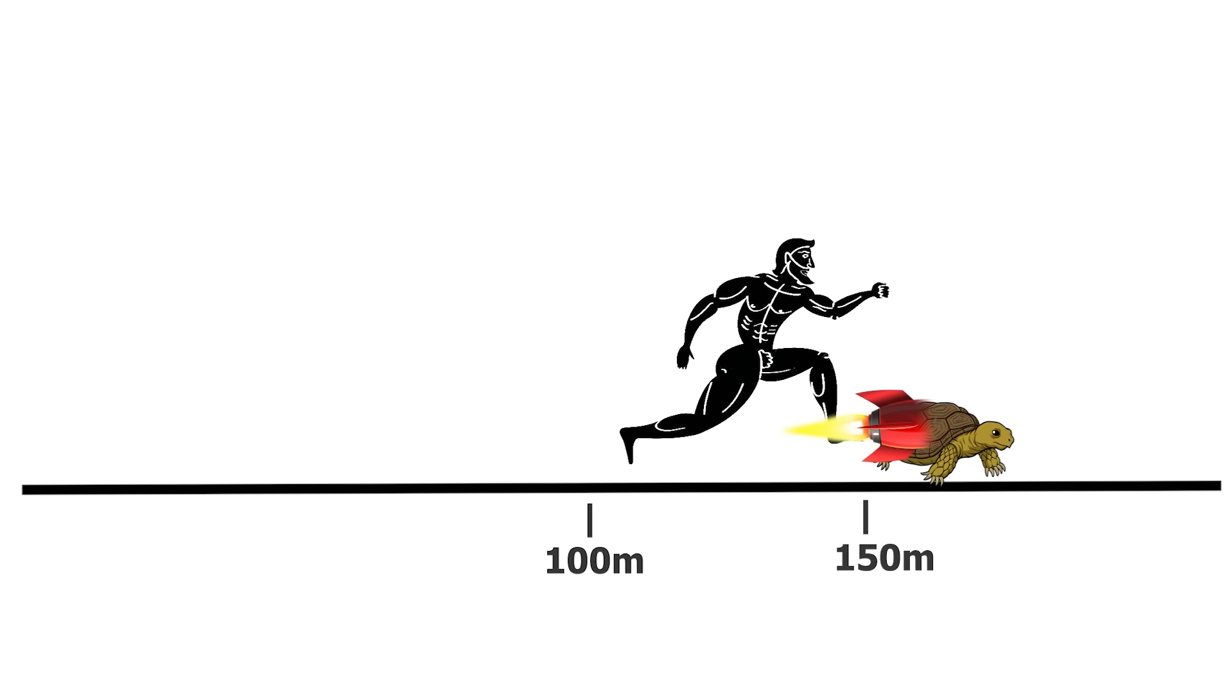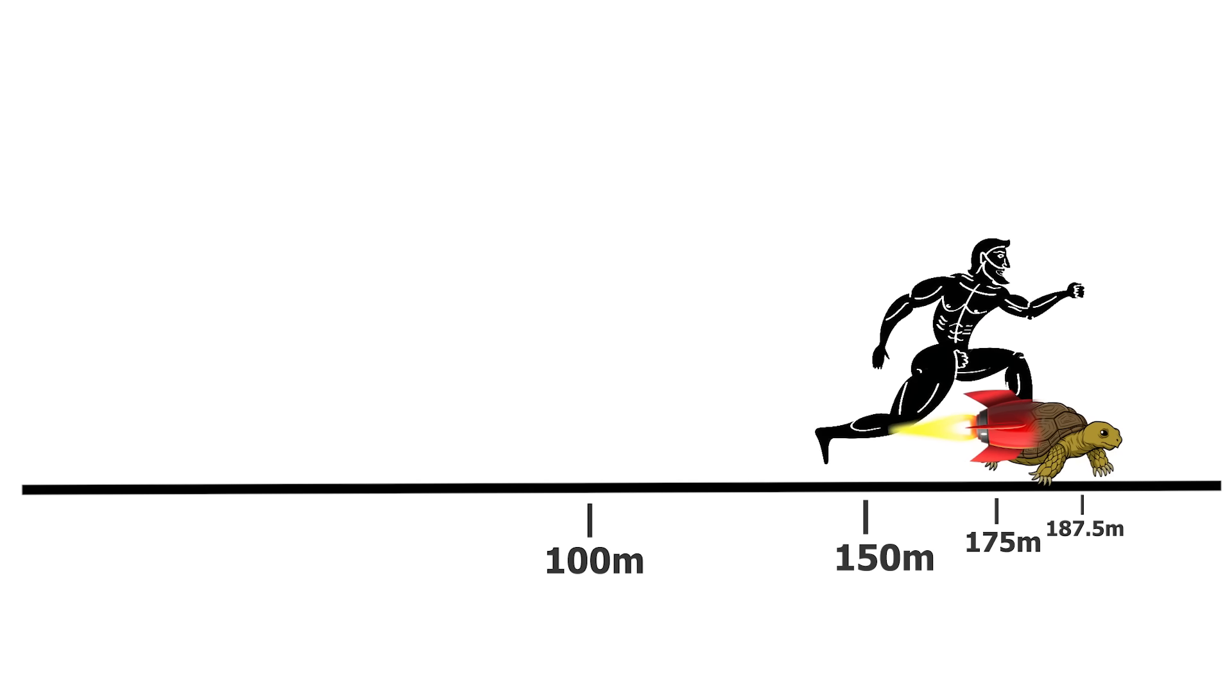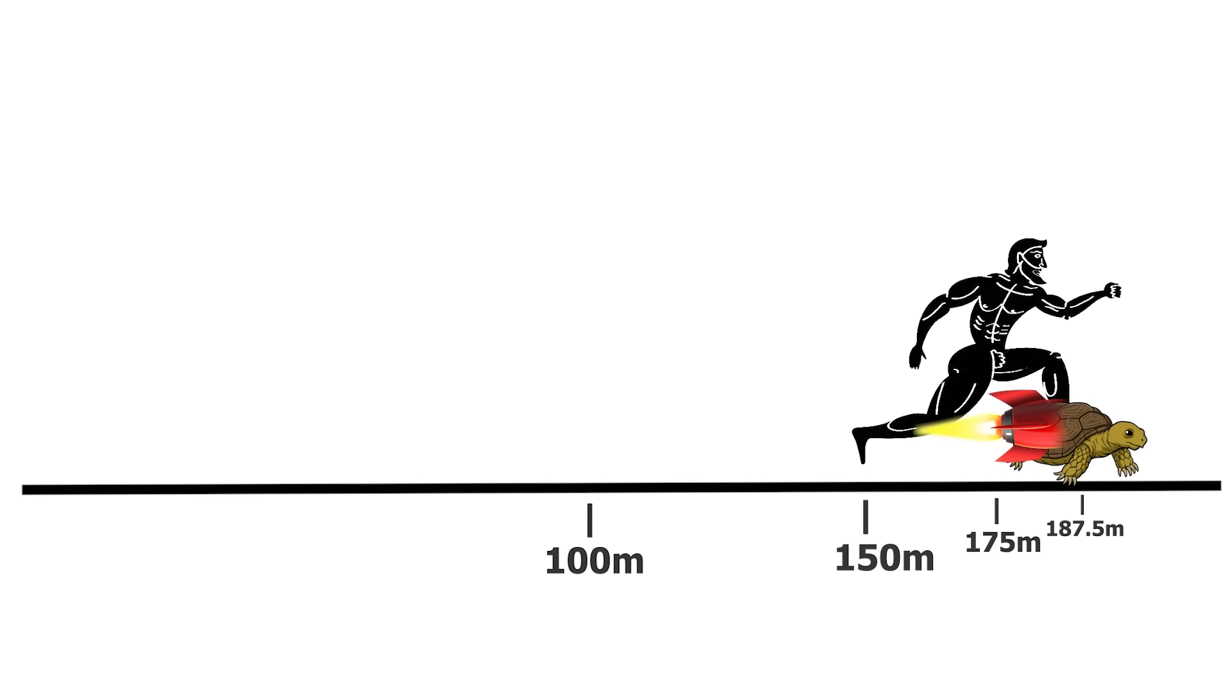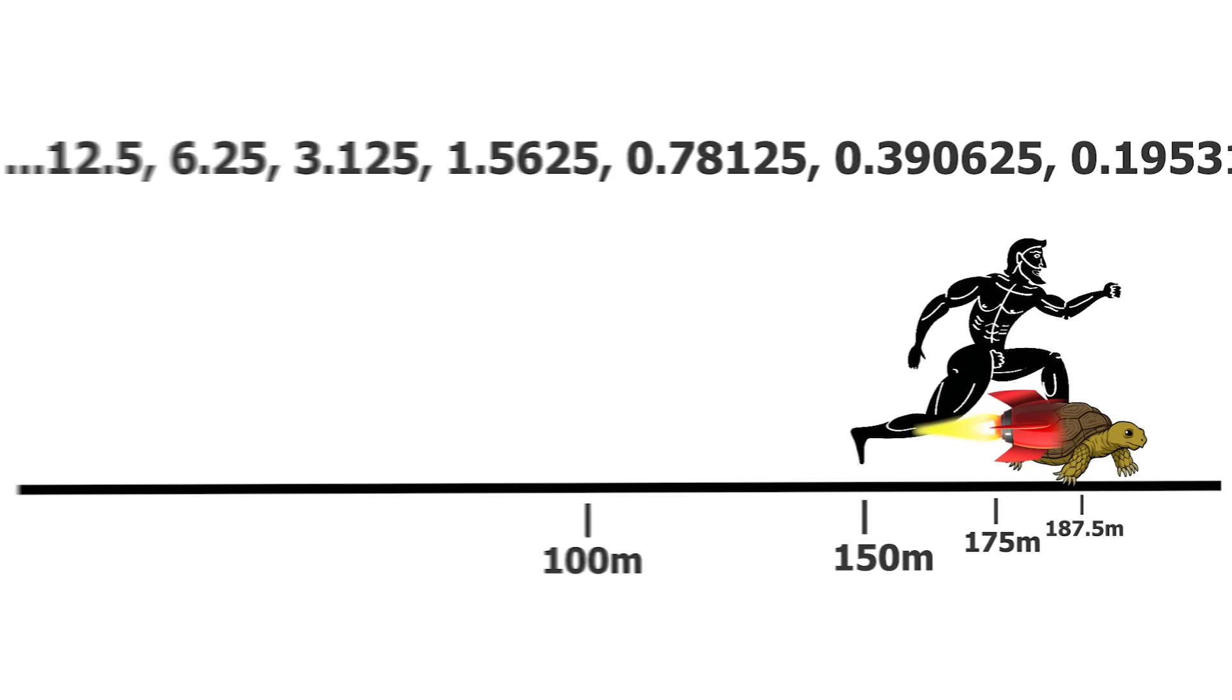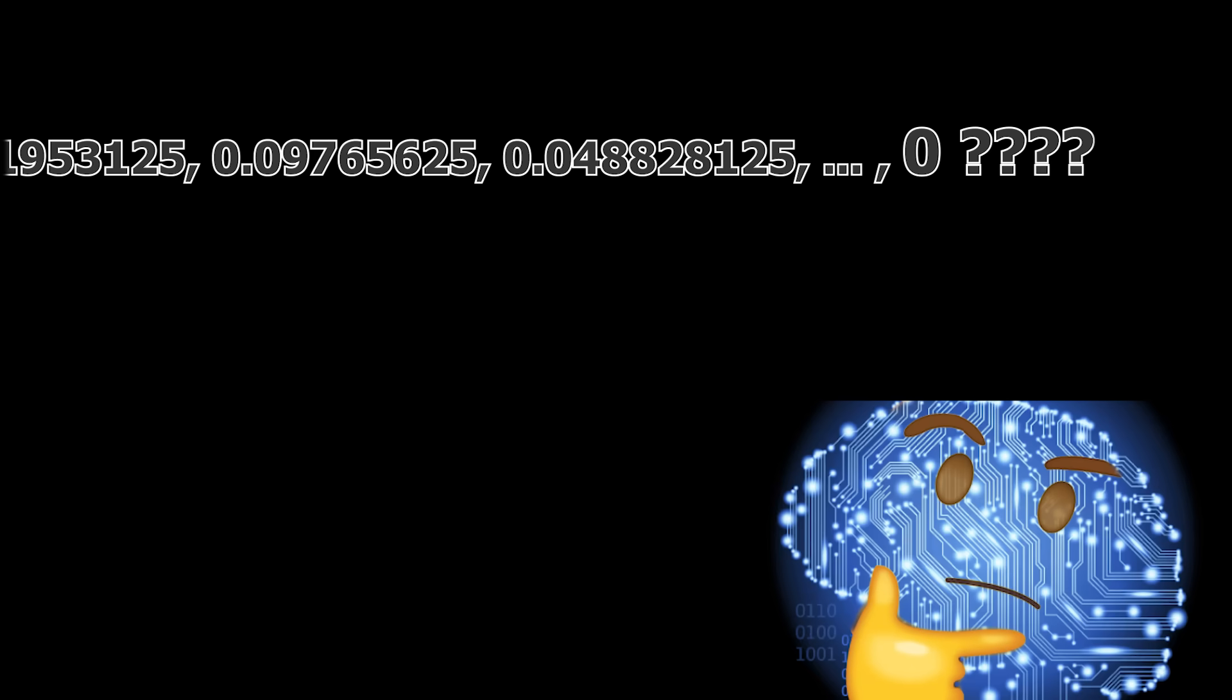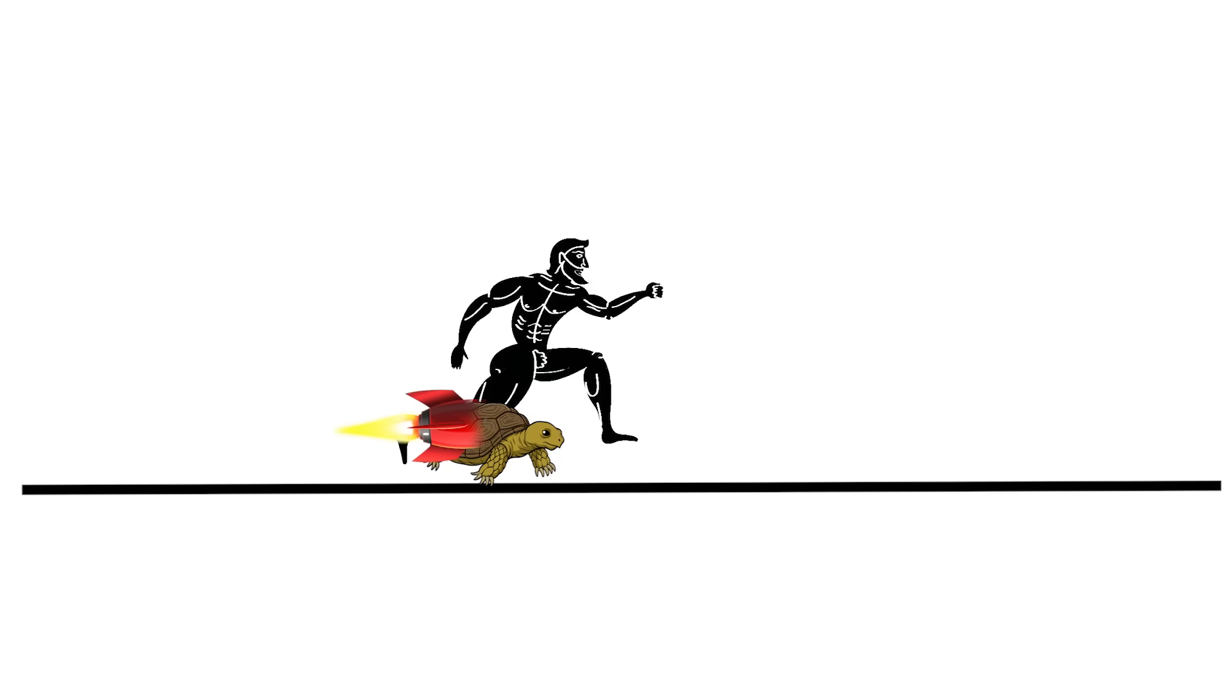After running another 50 meters, Achilles will be 25 meters behind the turtle, then 12.5 meters and so on. The distance will be reduced in half every time Achilles reaches the previous position of the turtle, but he will never overtake it. Or is there a point where we can't split in half anymore? In reality, obviously a sprinting human will outrun a tortoise.